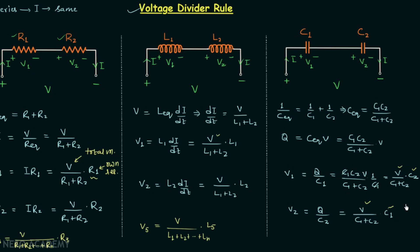The voltage divider rule for capacitors connected in series is now clear. As homework, you need to tell me what will be the voltage across the third capacitor when N capacitors are connected in series.